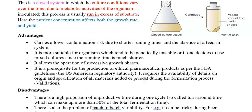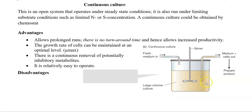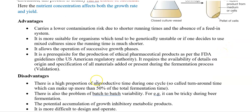Now we look at the advantages of batch culture. They carry a low contamination risk due to shorter running times and the absence of a feed-in system. A feed-in system refers to a system in which fresh nutrients are supplied and used-out nutrients are removed. Batch culture is more suitable for organisms which tend to be genetically unstable, or for mixed cultures, since the running time for such cultures is shorter.